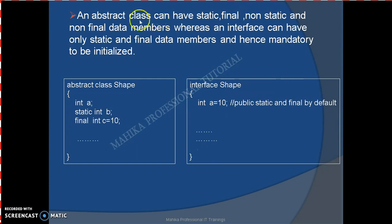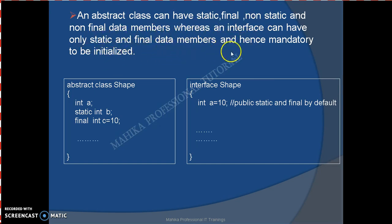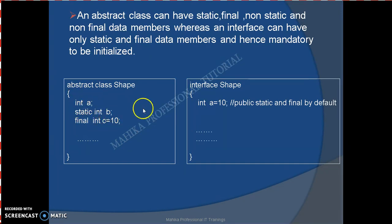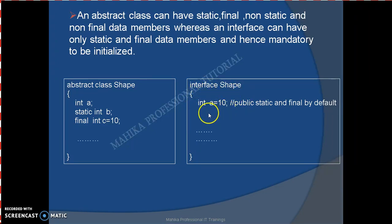The next difference is that in an abstract class we can have static, final, non-static, and non-final data members, whereas in an interface we can have only static and final data members, and hence they are mandatory to be initialized. That is, in an abstract class we can have non-static, non-final fields, static fields, and final fields. But in case of an interface we can have only static and final fields, so they are mandatory to be initialized at the time of declaration itself.